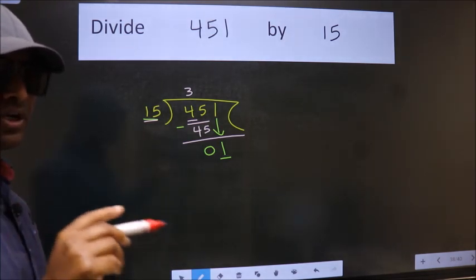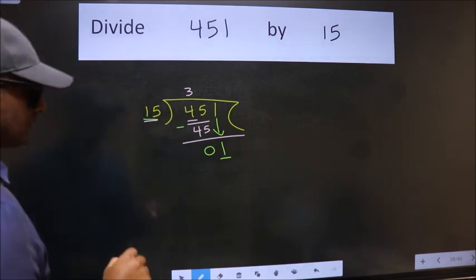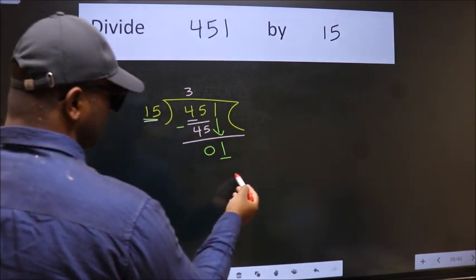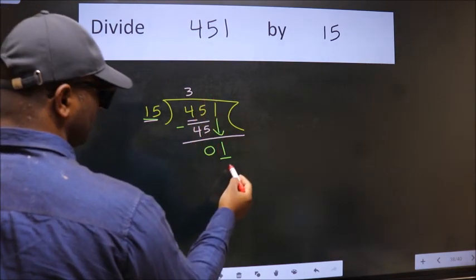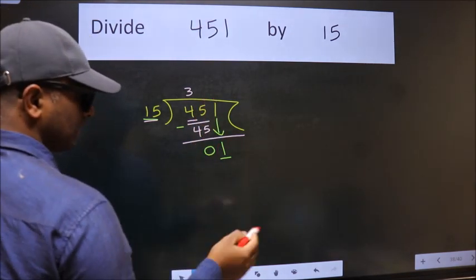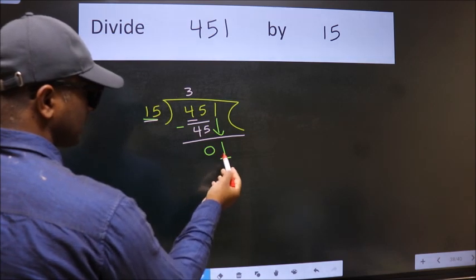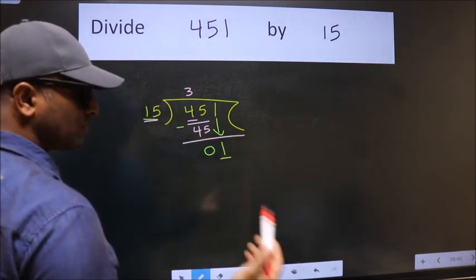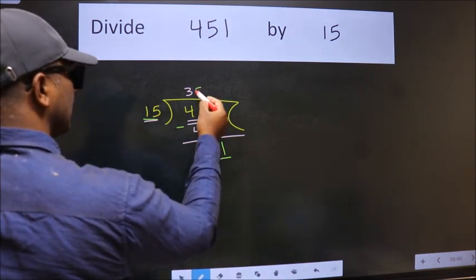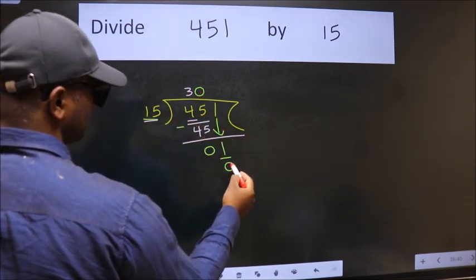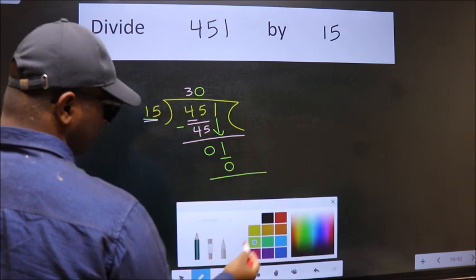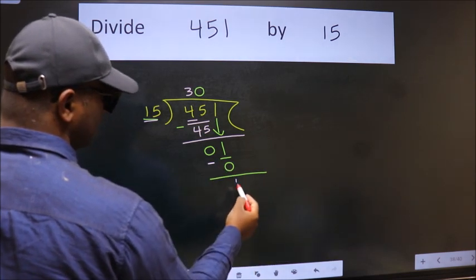Instead of that, what we should think of doing is which number should we take here. If I take 1, we will get 15. But 15 is larger than 1. So what we do is we take 0 here. So 15 into 0, 0. Now we subtract. We get 1.